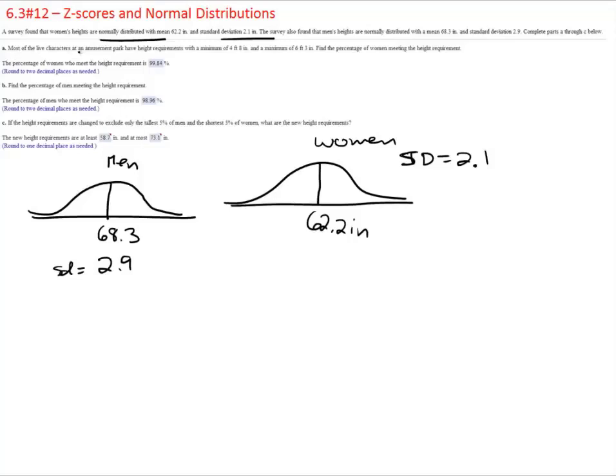Most of the live characters in an amusement park have height requirements with a minimum of 4 feet 8 inches and a maximum of 6 feet 3 inches, and they want you to find the percentage of women meeting that requirement. So they're basically saying where would those two values land on our distribution and therefore what percentage would be in between those two numbers.